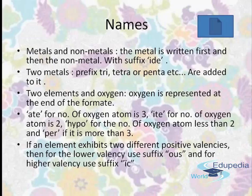When we talk about two nonmetals, prefixes like tri, tetra, and penta are added. For two elements combined with oxygen, oxygen is represented by endings: if the number of oxygen atoms is 3 we write ATE, if it's 2 we write ITE, if less than 2 we write HYPO, and if more than 3 we write PER. For example: three oxygens — sodium chlorate; two oxygens — sodium chlorite; less than two — sodium hypochlorite; more than three — sodium perchlorate.